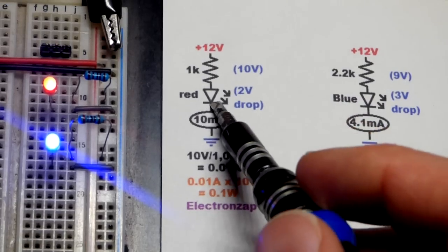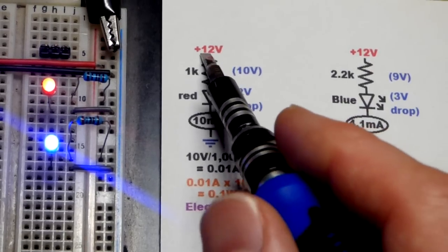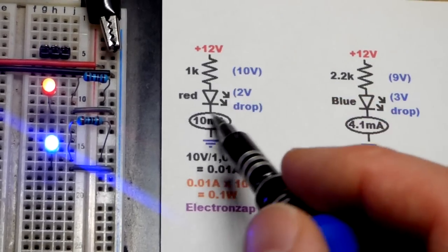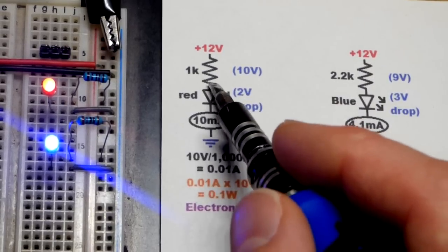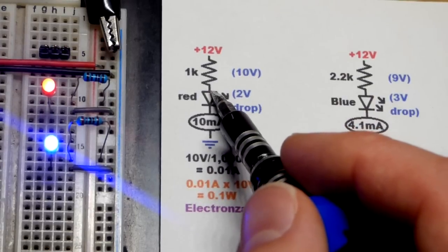Now, we are going to light a red LED with 12 volts right there. Again, red LED is going to drop about 2 volts when you put it in the right way, forward bias, anode more positive, cathode more negative. Make sure you do that.